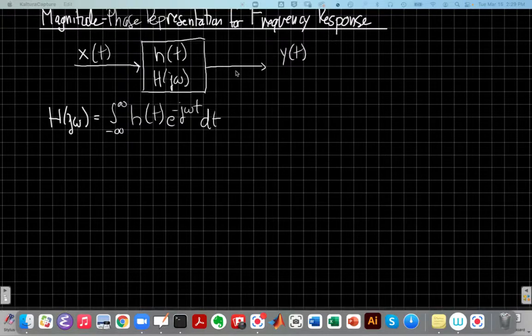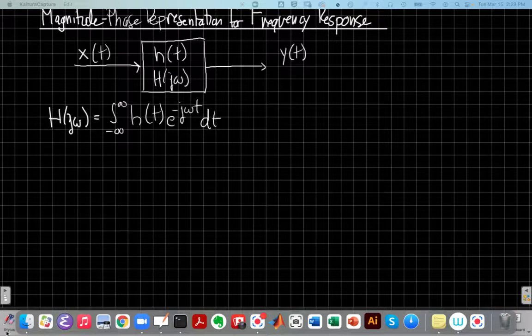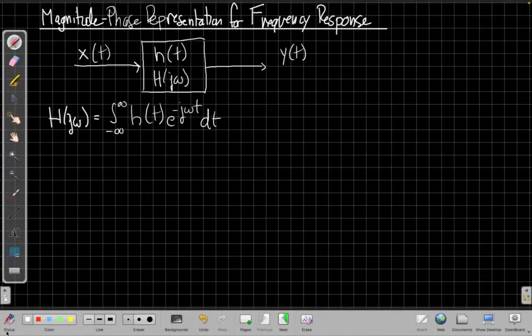So in general, h of j omega is the Fourier transform of the impulse response like I've shown here. We can get complex valued functions from this e to the minus j omega t. And so starting today, we're going to look at a more complete view of the world where h of j omega is a complex function. It has a real and an imaginary part.